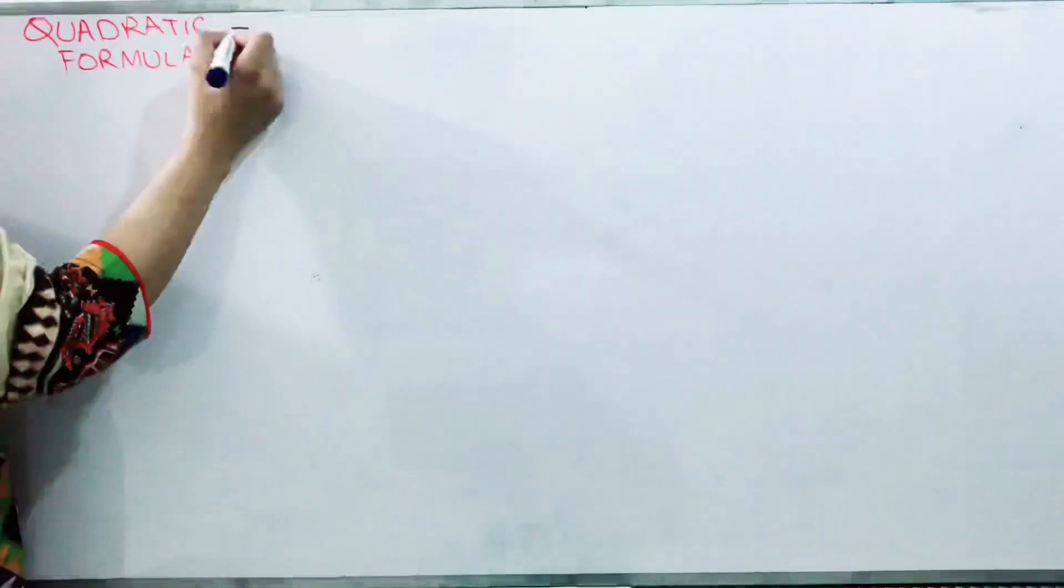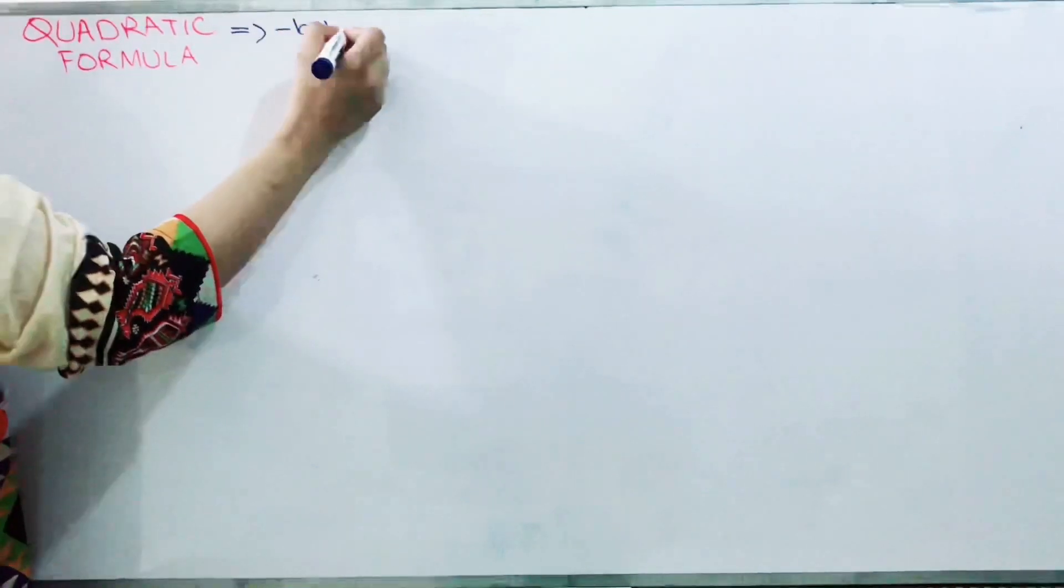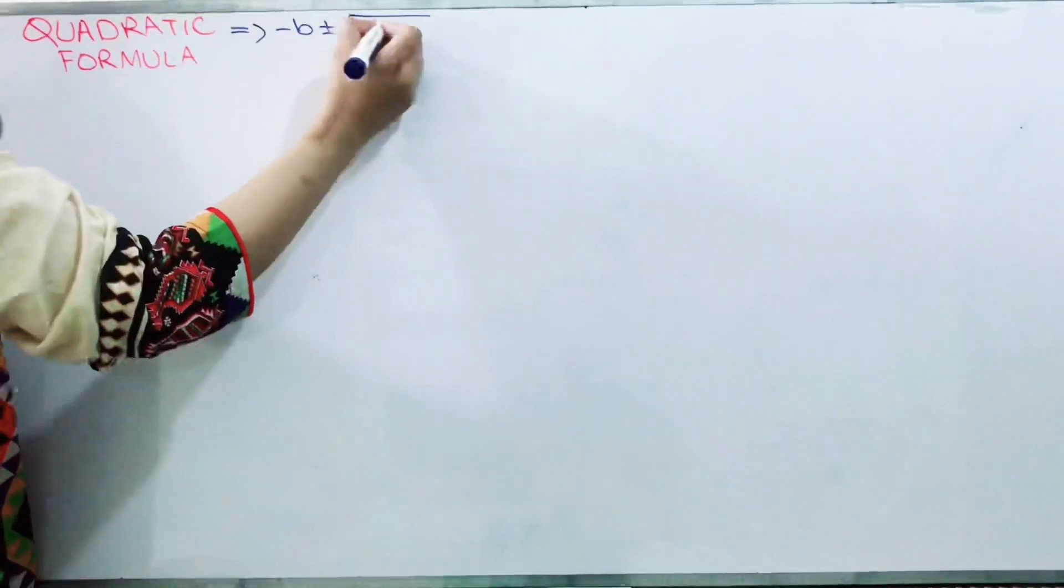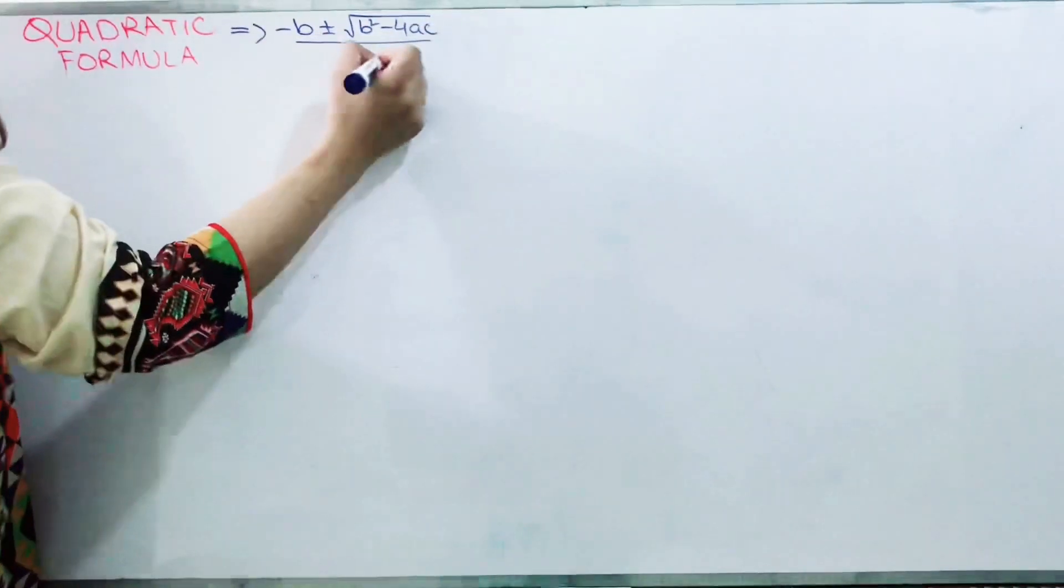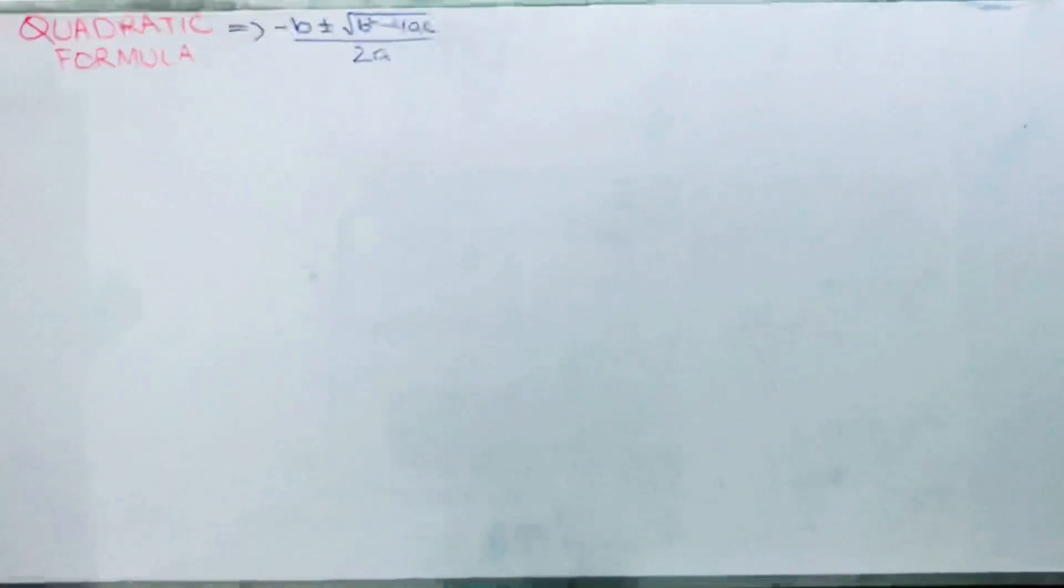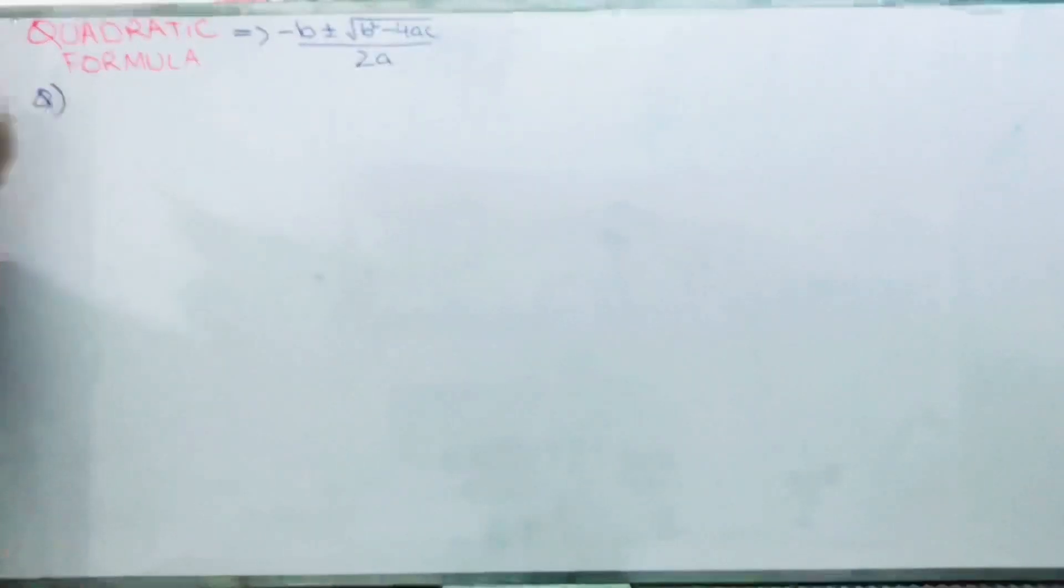Obviously, you should know the formula. The formula is minus b plus minus under root b square minus 4ac, all by 2a. This is your quadratic formula. We will solve a question by this method.